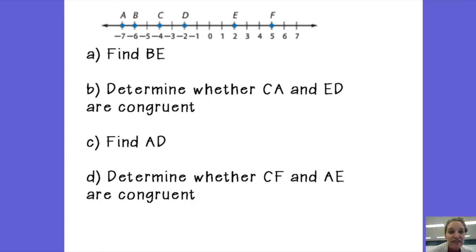When you're trying to find the length of a segment on a number line, you're just going to count the number of spaces in between the two endpoints. But an important thing to remember is that distance between two points or the length of a segment will always be positive.